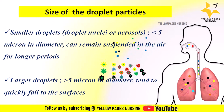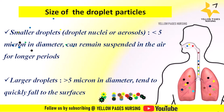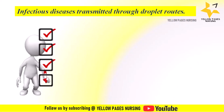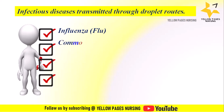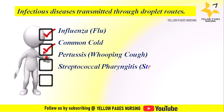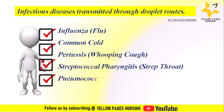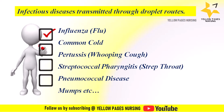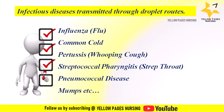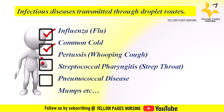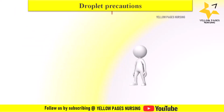Next come infectious diseases transmitted through droplet routes. These include influenza or flu, common cold, pertussis (whooping cough), streptococcal pharyngitis, pneumococcal disease, mumps, and others. All these diseases spread through respiratory droplets when an infected person coughs, sneezes, or talks.